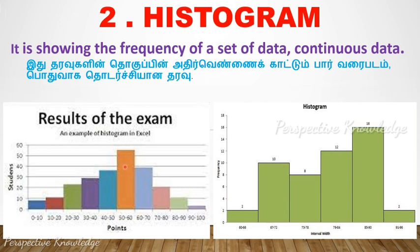You can easily find patterns in the data using a histogram. In industry, we use it to track defects and product quantity — for example, how many rejections occurred.